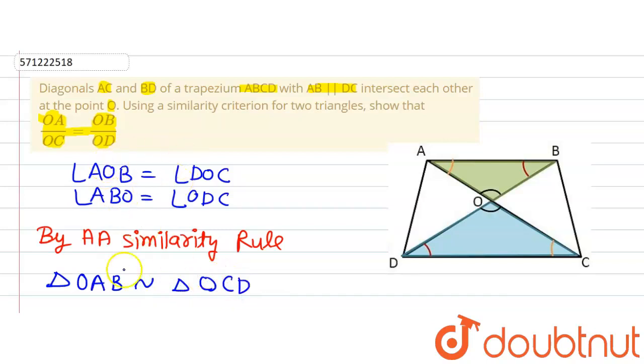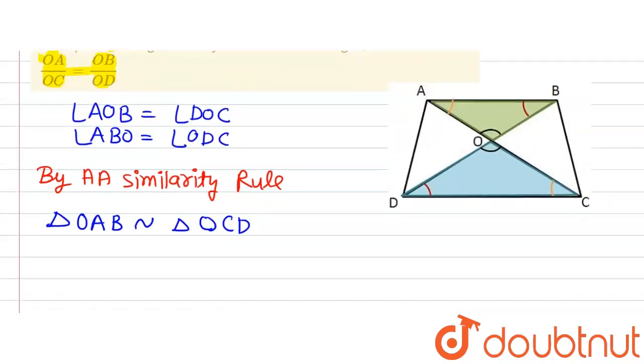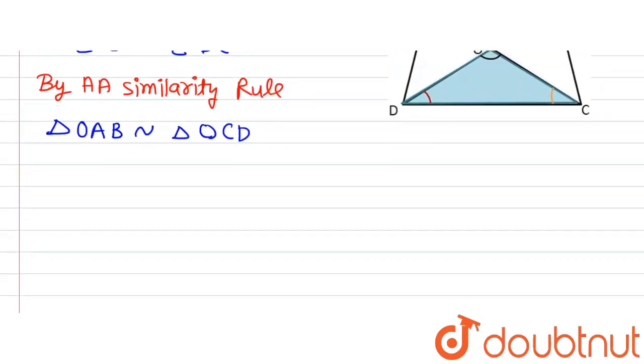Because angle O is equal to angle O, we are putting O as the first vertex to represent both triangles. Then angle A equals angle C, so A corresponds to C and B corresponds to D. Therefore, triangle OAB is similar to triangle OCD.